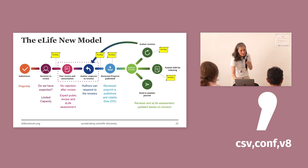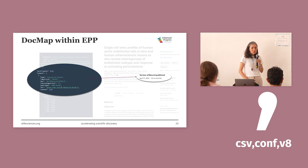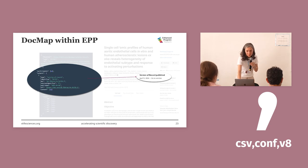If authors decide to send to another journal, unfortunately we don't have this data. But a Version of Record looks like that in the DocMap, and here is how it looks on the website as well.